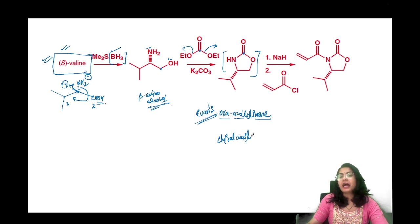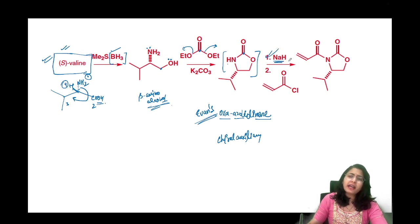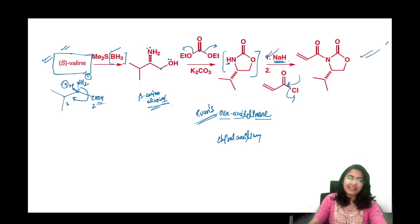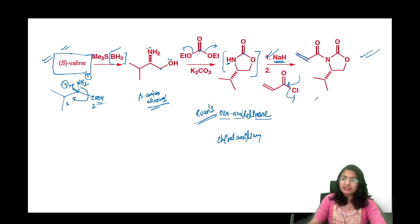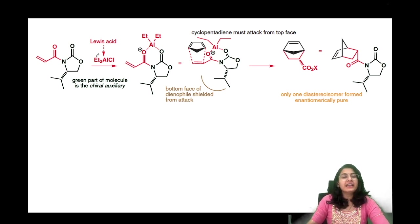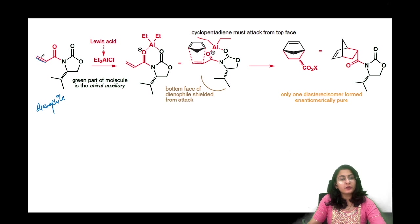This is our chiral auxiliary. To connect it to the molecule: the nitrogen has a proton, so we use sodium hydride or any base to remove that proton — nitrogen becomes negatively charged — then it attacks the electrophilic carbonyl as the chloride leaves. This gives us the chiral auxiliary connected to the molecule. The carbon-carbon double bond can now behave as a dienophile and induce selectivity because of the bulky isopropyl group.